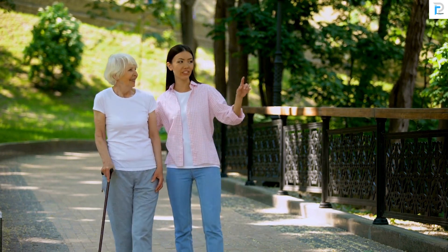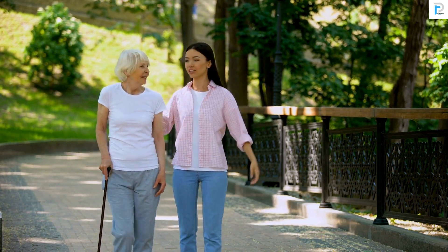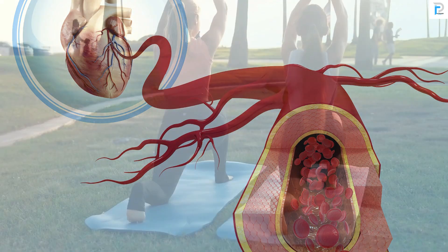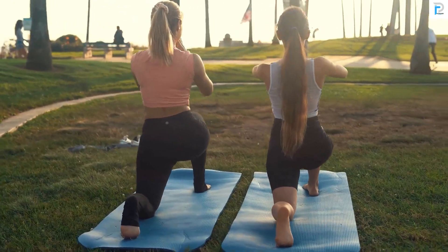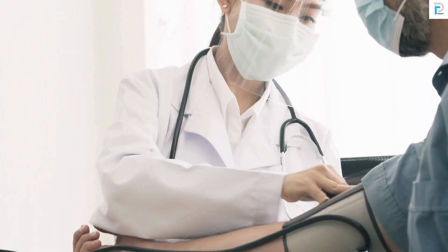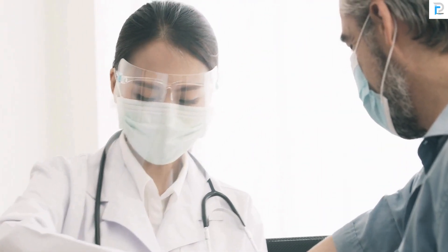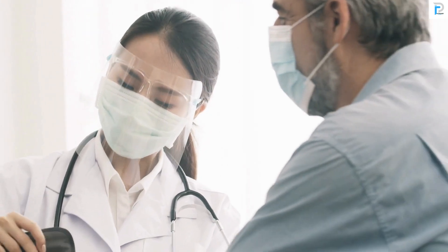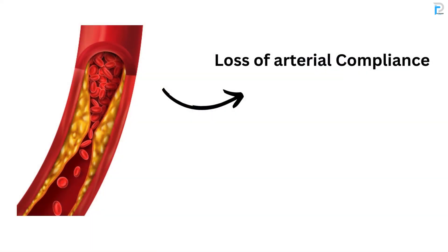There are many factors which affect arterial compliance. For example, age: as we grow older, the loss of elastic fibers from the arterial wall makes the arteries less compliant. Other factors include lifestyle and pathological conditions such as atherosclerosis or hypertension, both of which also make the arteries less compliant.